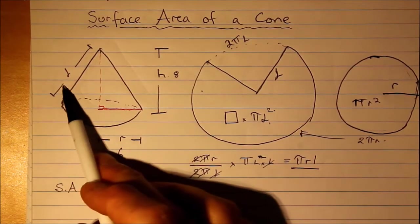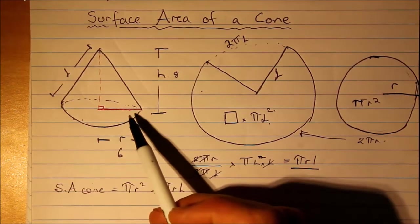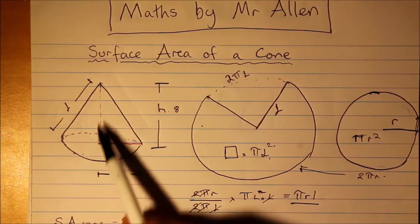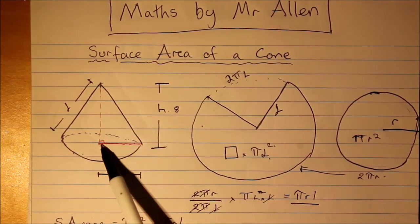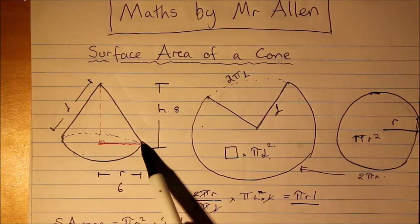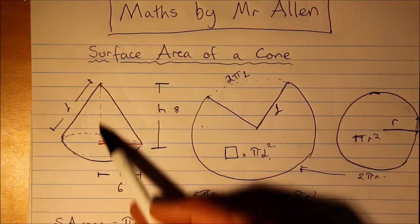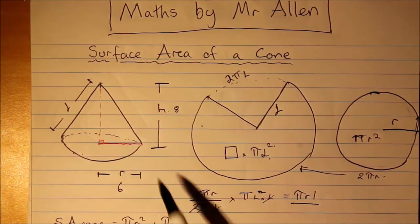Now how do we find the slant height? Well, I've drawn this little right angle triangle coming down through the center, and l here would form the hypotenuse of this smaller right angle triangle.